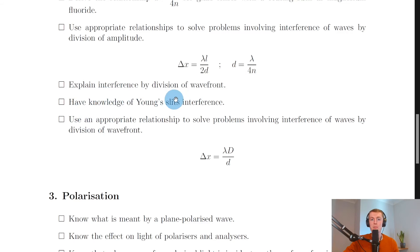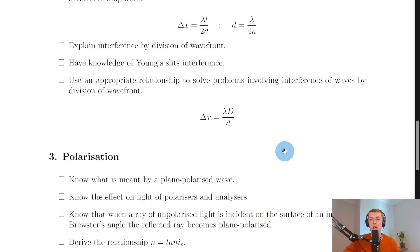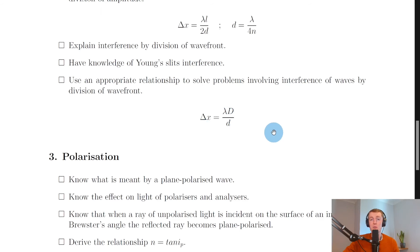Next, you need to explain interference by division of wavefront, which relates to Young's double slit experiment. You need knowledge of Young's slits interference — an example being passing laser light through a double slit and observing an interference pattern on a screen. The equation for Young's double slit is Δx equals λD over d, where Δx is fringe spacing, λ is wavelength, D is the distance between the slits and the screen, and d is the slit separation.